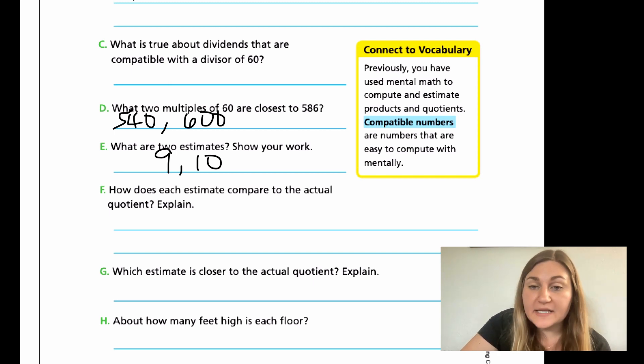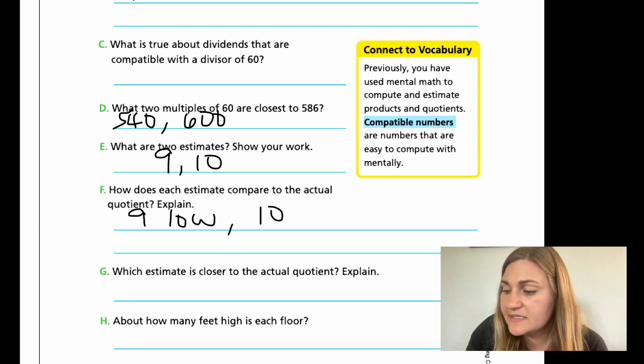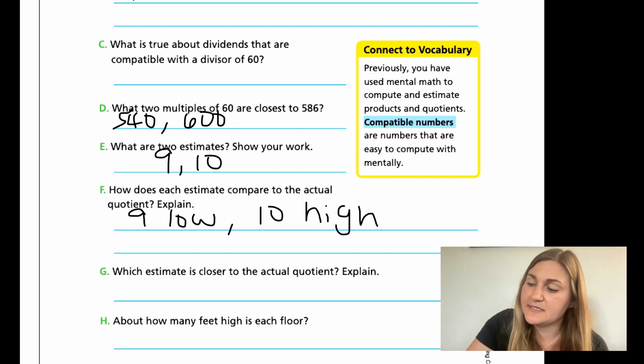Hopefully you had time to do those three. How does each estimate compare to the actual quotient? Well, the estimate of 9 is going to be too low, and the 10 is going to be too high. And reminder, you do want to put these in complete sentences.